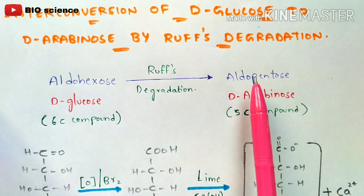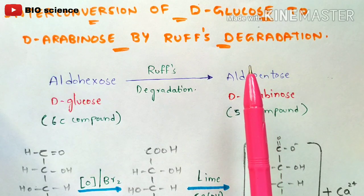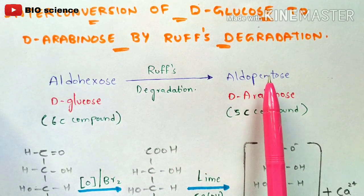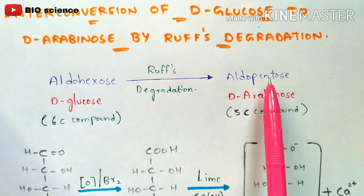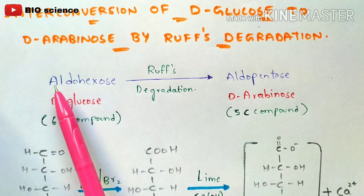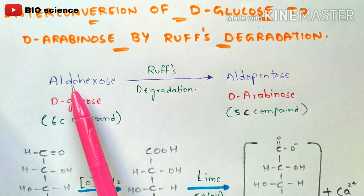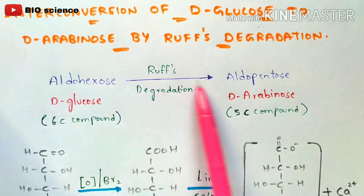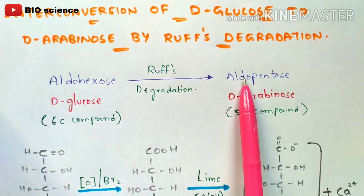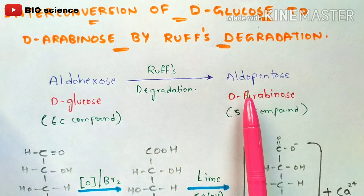In my previous video on interconversion of aldopentose to aldohexose by Kiliani-Fischer Synthesis, we saw that aldopentose is a 5-carbon compound — the name itself indicates this. Aldohexose is a 6-carbon compound. 'Aldo' means the aldehyde group is present at the first carbon, and this applies to both. So one is a 6-carbon compound and the other is a 5-carbon compound.